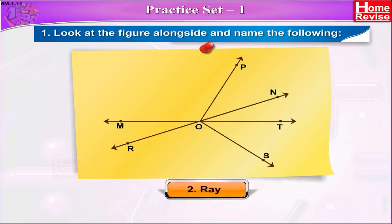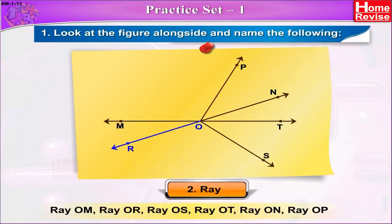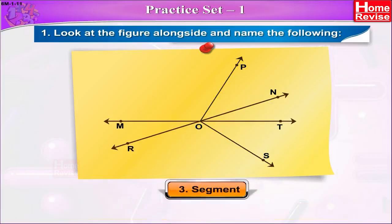Ray OM, Ray OR, Ray OS, Ray OT, Ray ON and Ray OP are the rays in the given figure. Segment RN and segment MT are the line segments in the given figure.